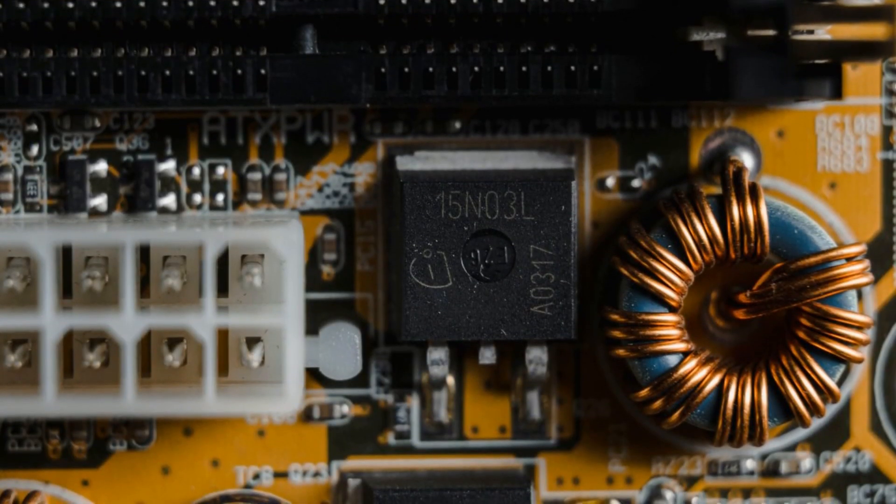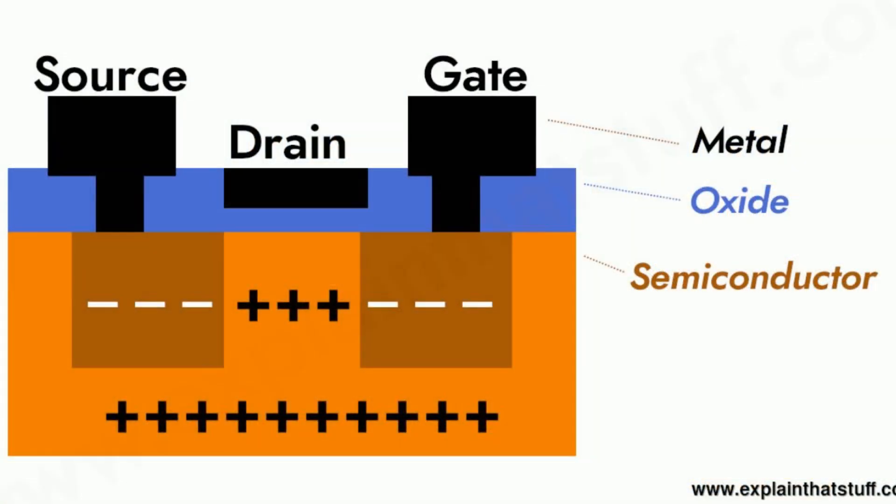Now, you might be curious, how does a transistor work? Well, think of a transistor as a tiny gatekeeper, controlling the flow of electricity in a circuit.